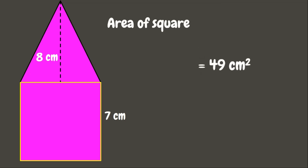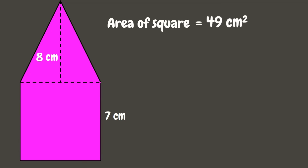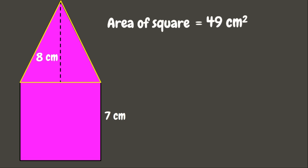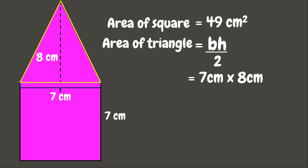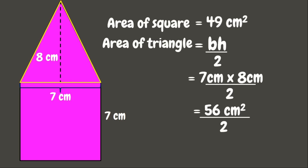Now let's get the area of the triangle. The formula is base times height divided by 2. The base is 7 centimeters — equal to the side of the square — and the height is 8 centimeters. So 7 centimeters times 8 centimeters equals 56 square centimeters, divided by 2 gives us 28 square centimeters.